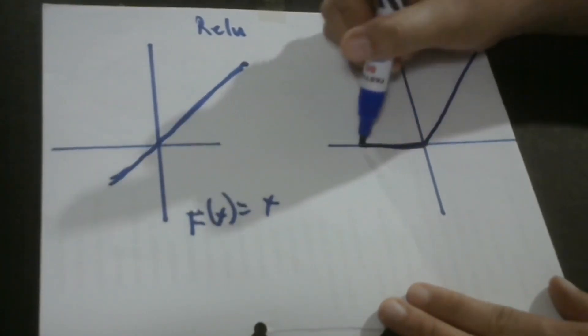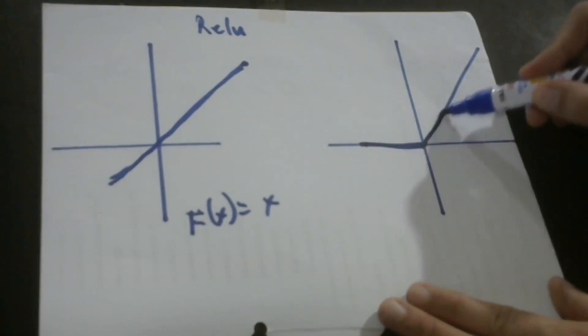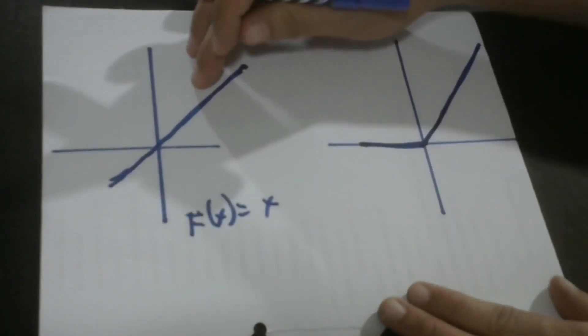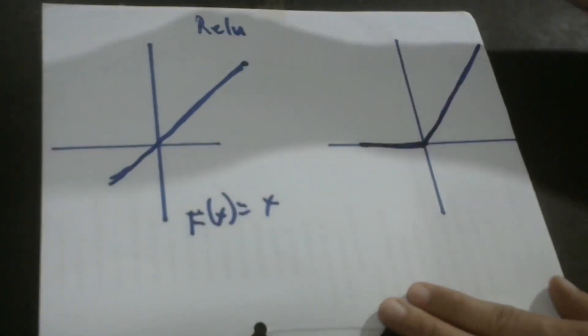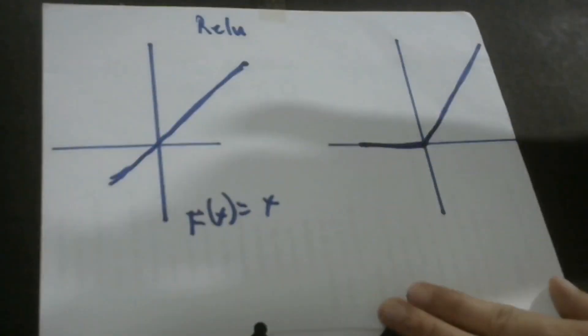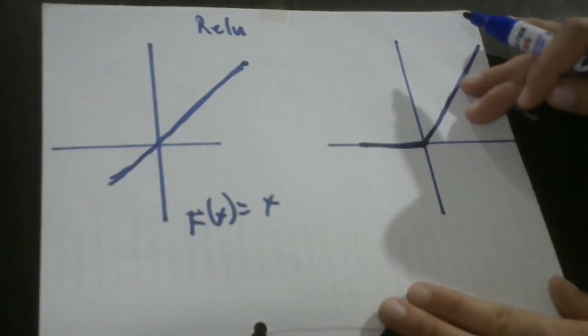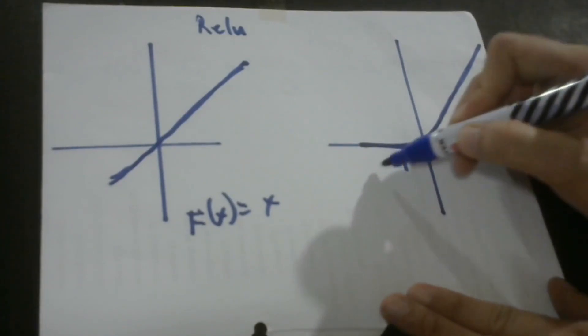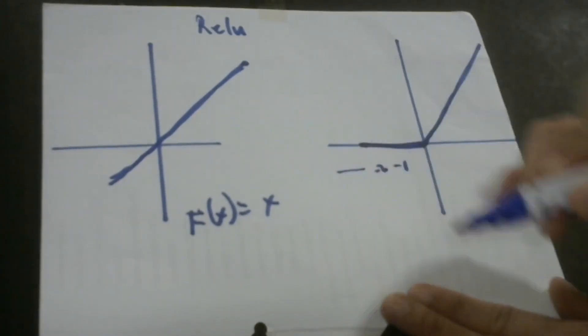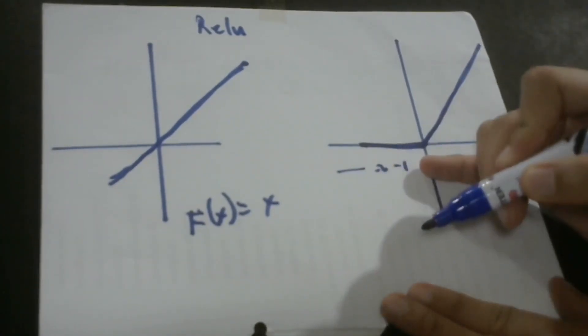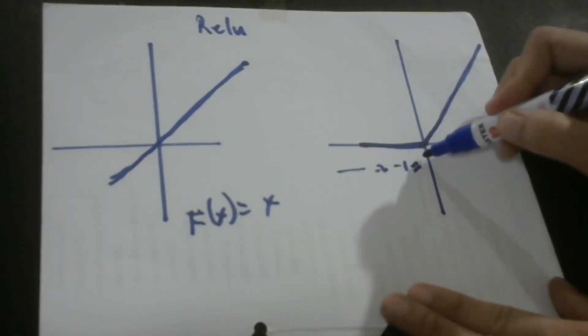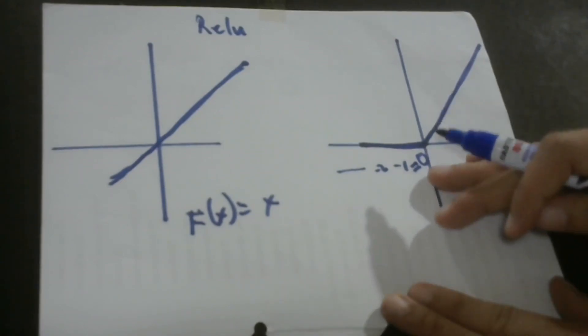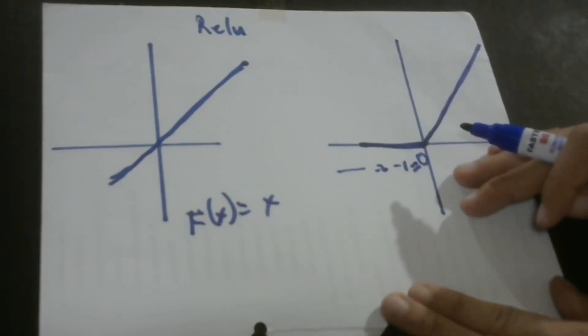So, these are the negative values and these are the positive values. Unlike your linear activation function wherein the values, whether it is positive or zero, would be as is, in the case of RELU, it's going to be different because when the value is negative, shall we say negative one, negative two, and so on, to negative infinity, then they will be equated to zero. So, it means to say that negative two, negative one will always be transformed to zero. So, that's how it works.